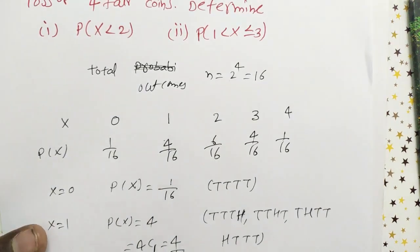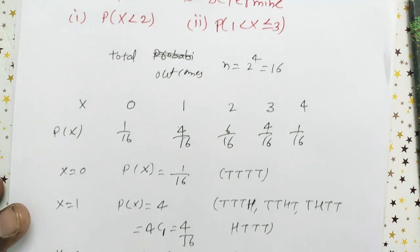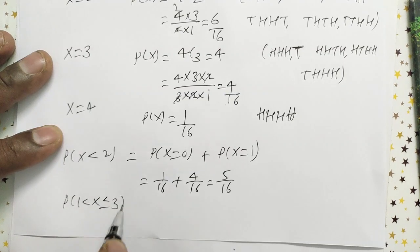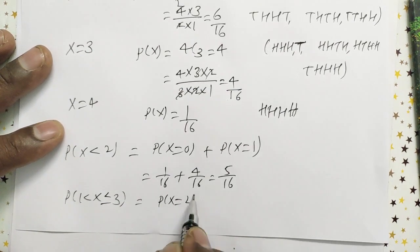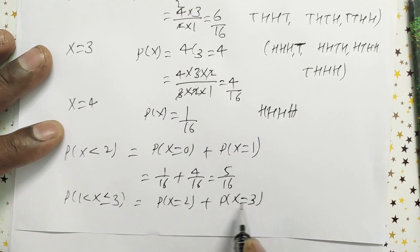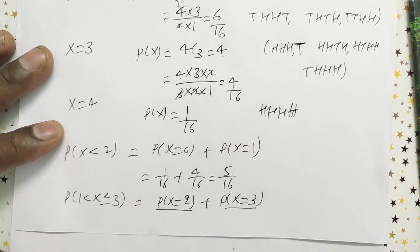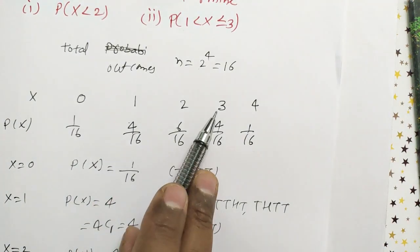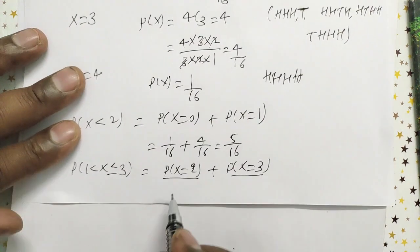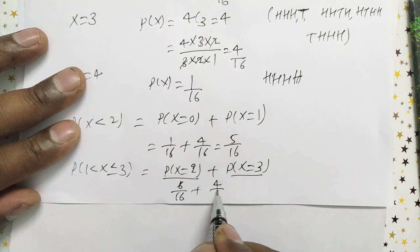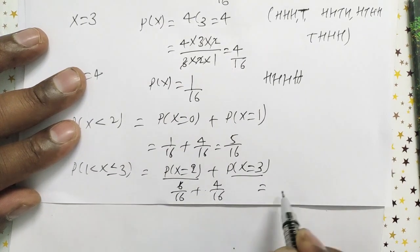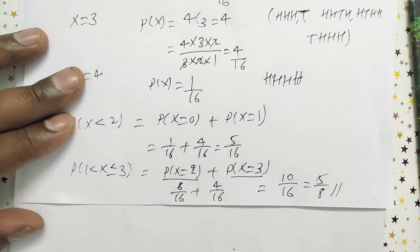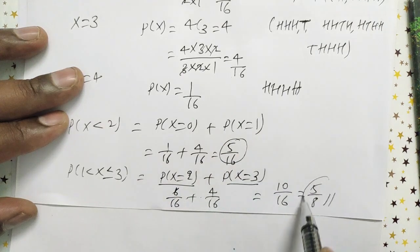The second question: P(1 < X ≤ 3) = P(X=2) + P(X=3) = 6/16 + 4/16 = 10/16 = 5/8. So the first probability is 5/16 and this probability is 5/8.